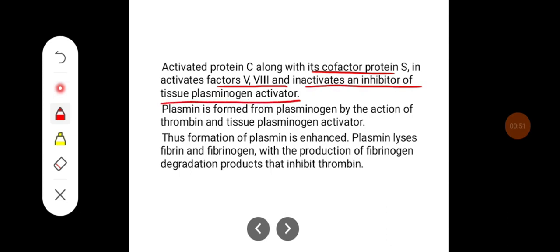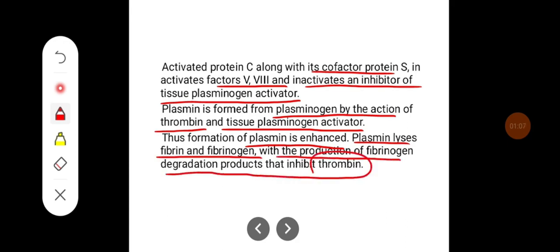Plasmin is formed from plasminogen by the action of thrombin and tissue plasminogen activator. Thus, formation of plasmin is enhanced. Plasmin lyses fibrin and fibrinogen with the production of fibrinogen degradation products that inhibit thrombin.